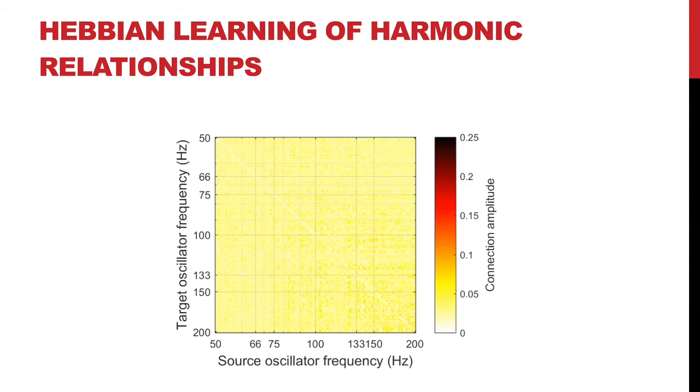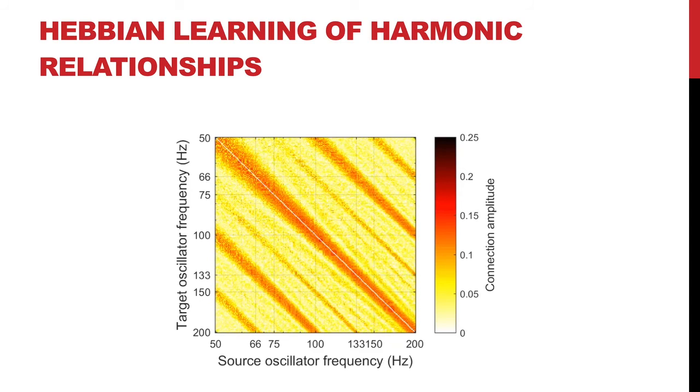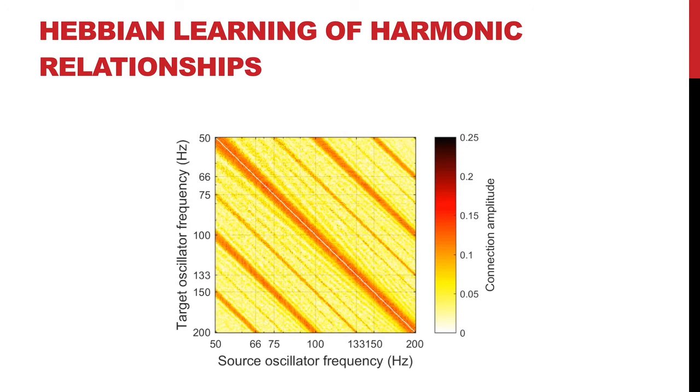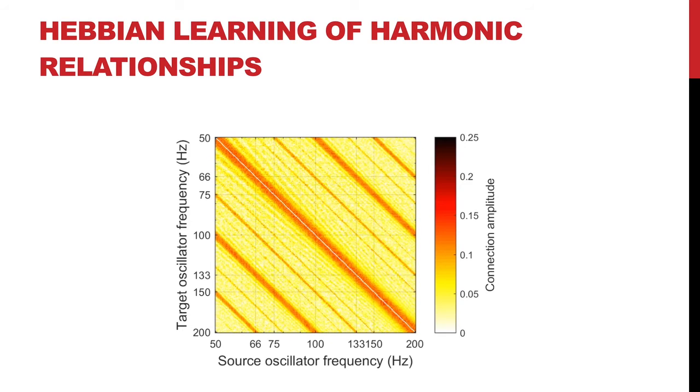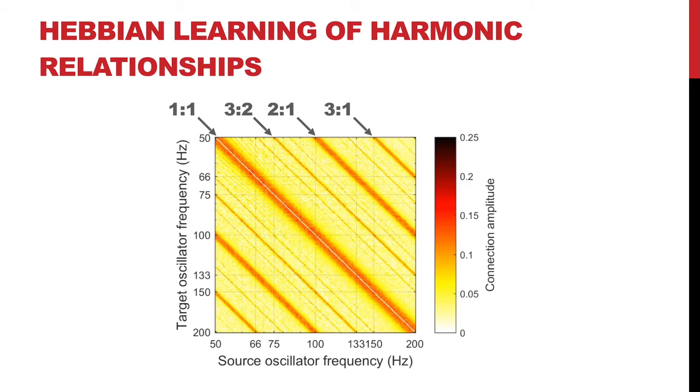Plastic connections between nonlinear oscillators also reflect the relative strength of mode lock synchronization. Here you're looking at the connection matrix for a network of oscillators. The oscillators are tuned to a range of frequencies from 50 to 200 Hz, and all oscillators are coupled to all other oscillators in the network through plastic connections. As you can see in the animation, the plastic connections grow strong between oscillators in simple frequency relationships, such as 1 to 1, 2 to 1, 3 to 1, and 3 to 2.